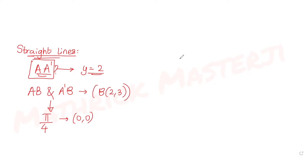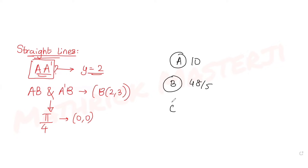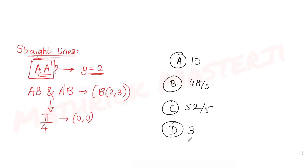The answer choices given to us are: option one is 10, the second option is 48/5, the third option is 52/5, and the last option is 3. We need to figure out which one of the answer choices is correct.